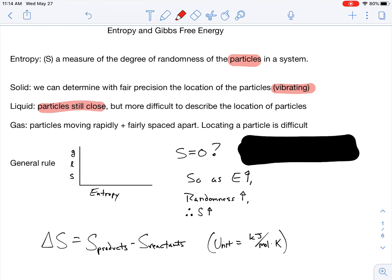Liquids, the particles are still close, they're sliding past one another. I can kind of find out where the particles are. However, with gases, particles are moving rapidly, they're not even near each other, so locating a particle is very difficult. From a solid to a liquid to a gas, entropy increases.